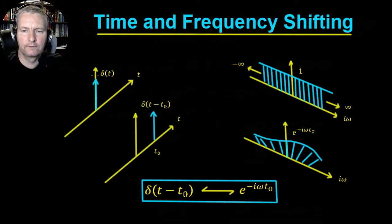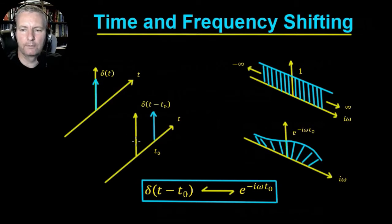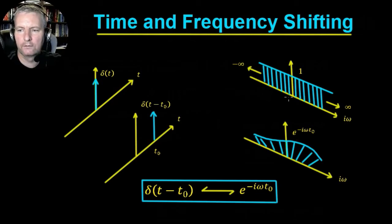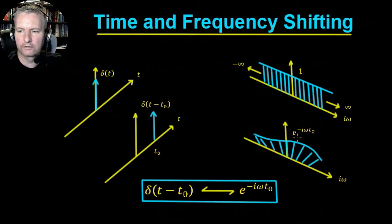We've already seen what happens when we shift the impulse function in time. If we take the impulse function delta(t) and find the Fourier transform of it, we get a value of 1, assumed to run off to plus and minus infinity. If we delay that impulse by a factor of t0 — so we have delta(t - t0) — it's equivalent to adding a linear phase onto the frequency domain. In effect, it's like allowing these phasors to start rotating: the positive ones rotate in one direction and the negative values rotate in the other, creating that corkscrewing effect which is so useful in signal processing for representing signals.